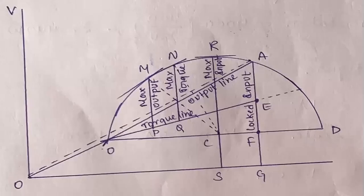Now, regarding the maximum quantities, we are having three maximum quantities: maximum output M, maximum torque or rotor input N, and the third one is maximum input power R. So these three are maximum quantities. Now from the circle diagram, these maximum values occur at the positions M, N and R.